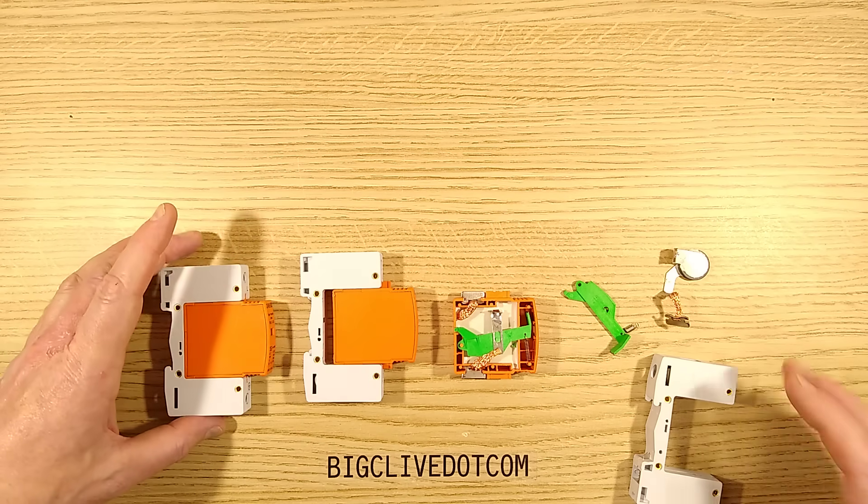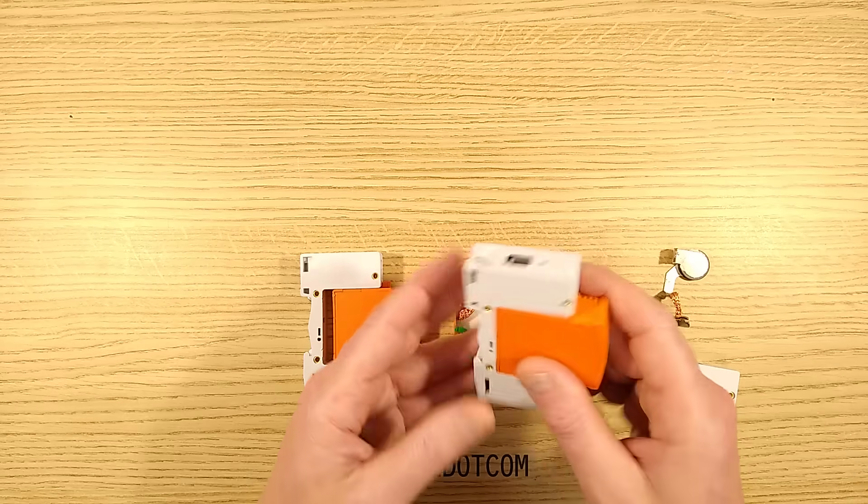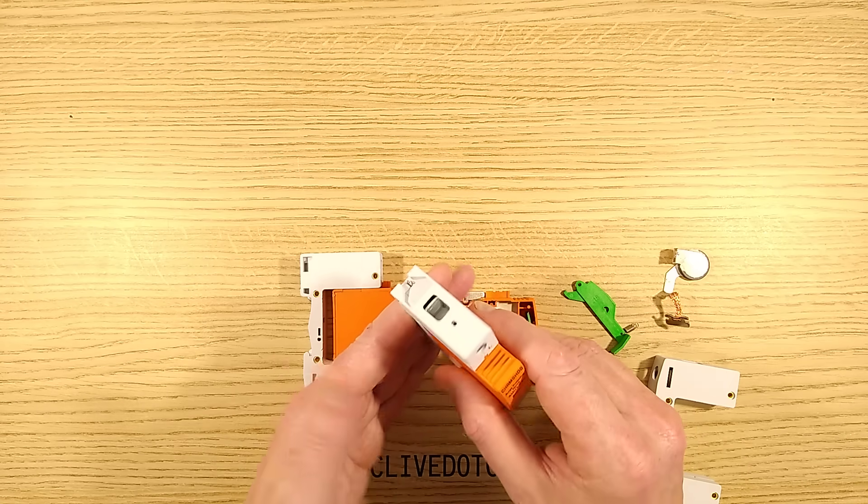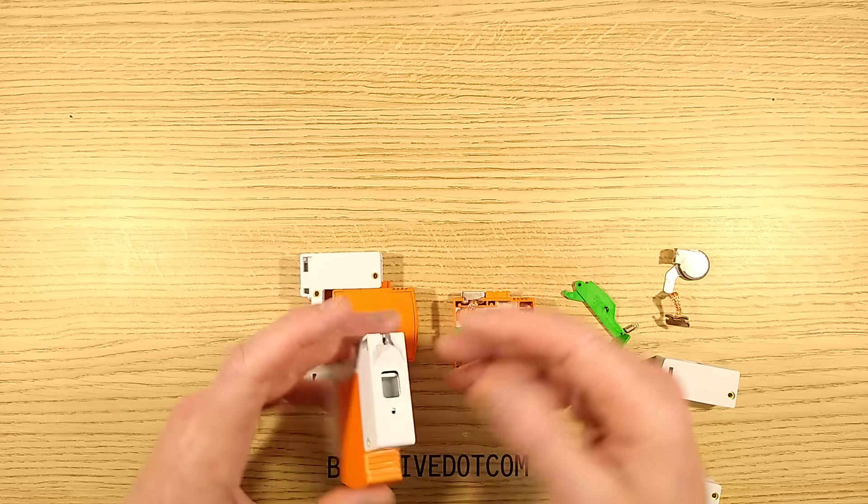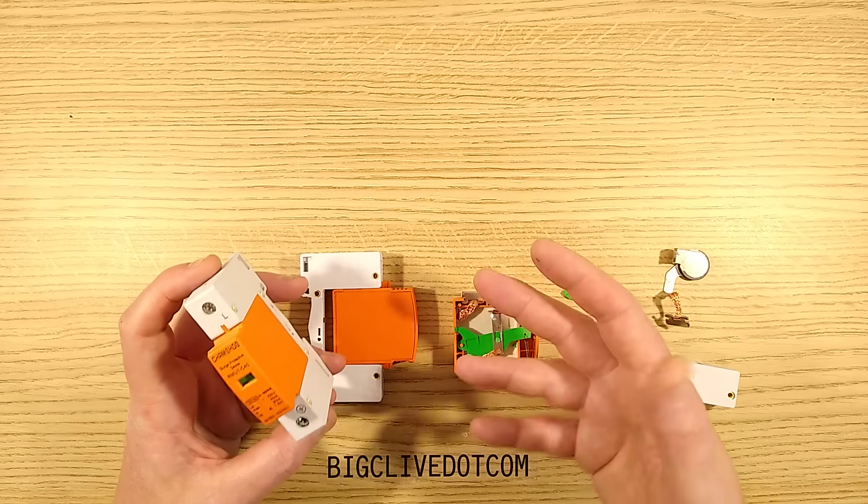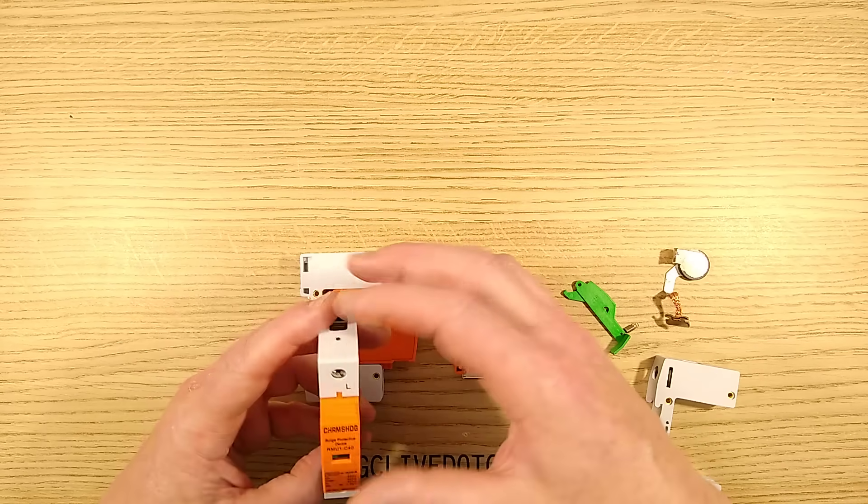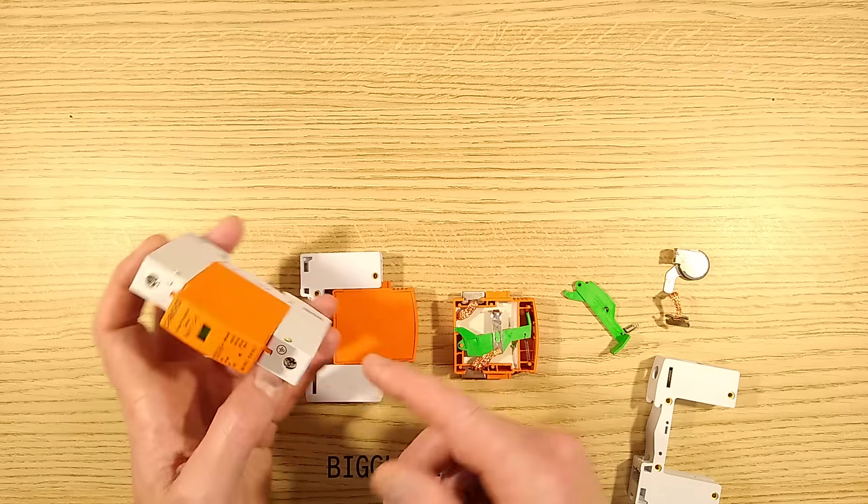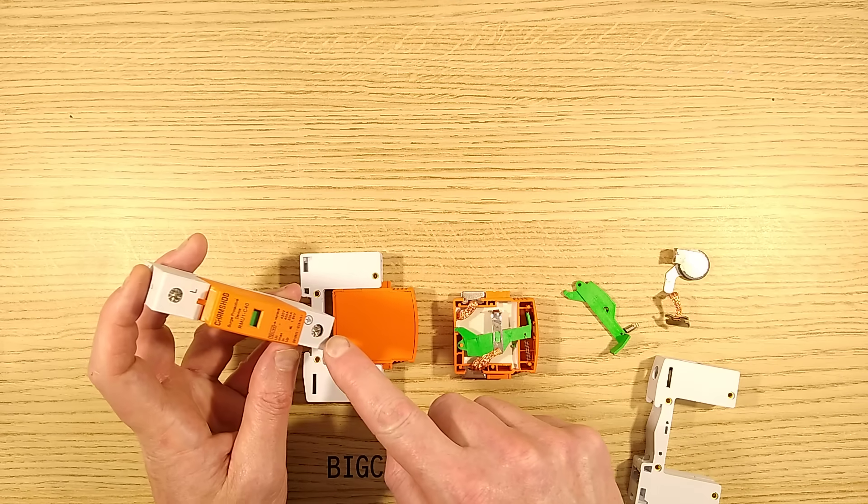So let me explain how these work. You clip the unit onto the DIN rail in your electrical distribution equipment. You put your live in here. If you're in a country with more than one phase, then you put each phase into a separate unit. And then there is an earth connection or a ground connection here.